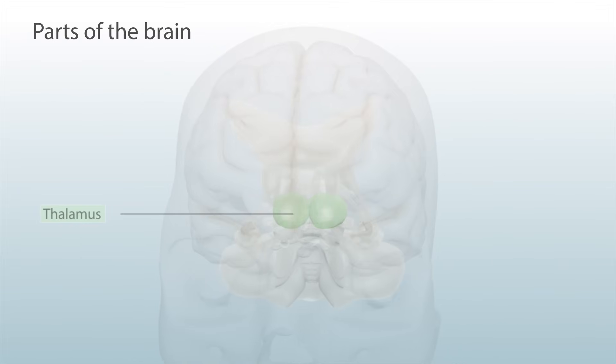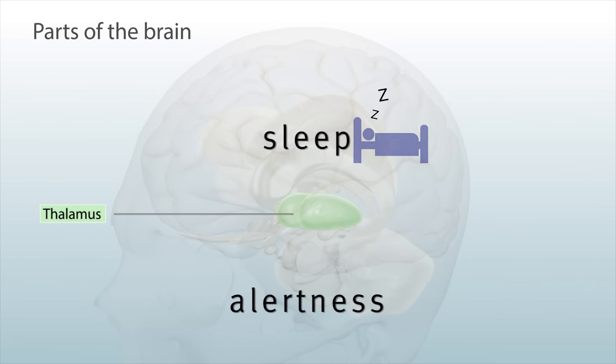The thalamus in the center of the brain relays sensory and motor information to the cortex, and helps with consciousness, sleep, and alertness.